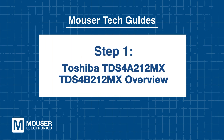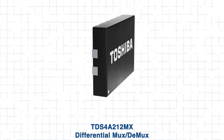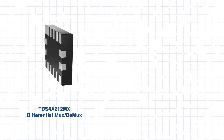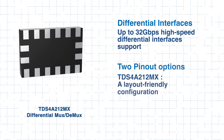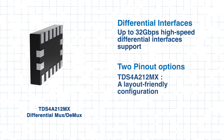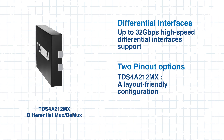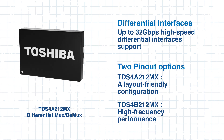Step 1: Toshiba TDS4A212MX and TDS4B212MX overview. To get a better understanding of the TDS4A and B, let's quickly go over some features and applications. They are designed for high-speed differential interfaces supporting data rates up to 32 gigabits per second. They offer two pinout options: the TDS4A provides a layout-friendly configuration, while the TDS4B is optimized for high-frequency performance, giving designers flexibility based on system requirements.